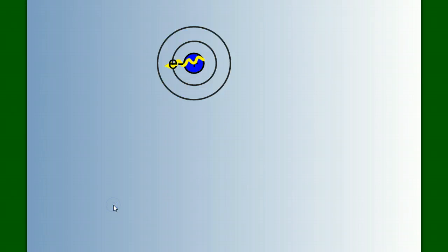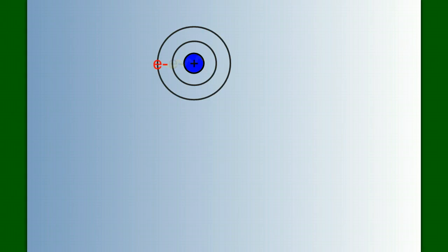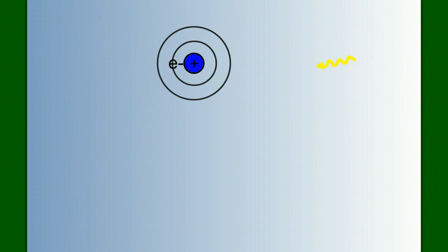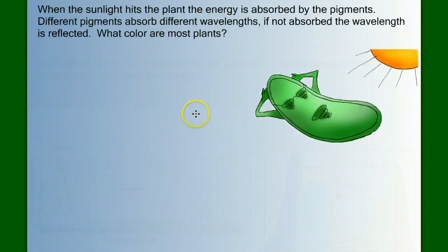How does a molecule absorb light energy? When a molecule gets struck by light, that photon of light can strike an electron and cause it to jump to a higher energy level. Often when an electron gets boosted to a higher energy level, it will immediately drop back down and emit that energy back out in the form of either light or heat. The key for us is to trap the electron while it's at that higher energy state — if we can grab it and put it into a bond at that point, that bond will have higher energy than if we used an electron at its ground state.